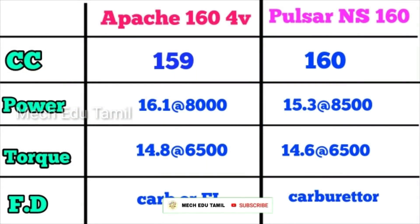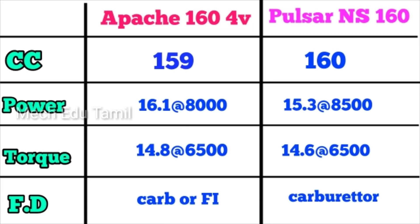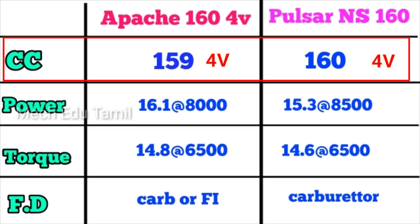In our comparison table, the first column is Apache RTR 164V and the second column is Pulsar NS160. For engine displacement, the Apache RTR 164V has a 159cc, 4-valve engine, while the NS160 has a 161cc engine.